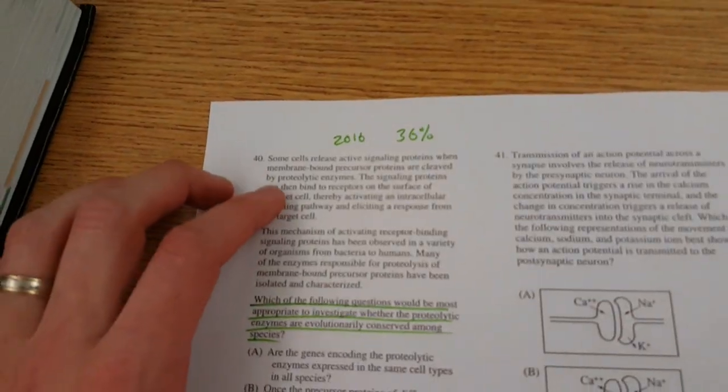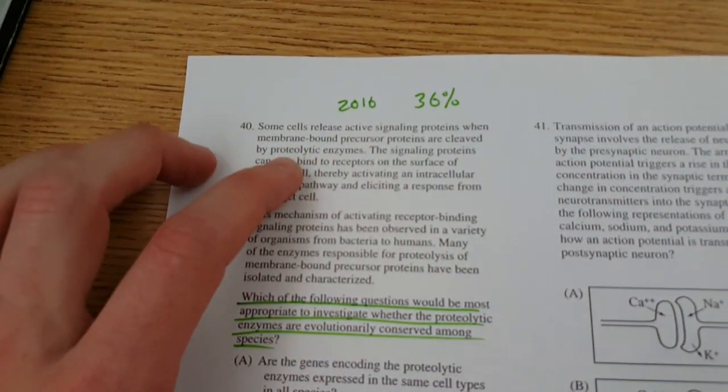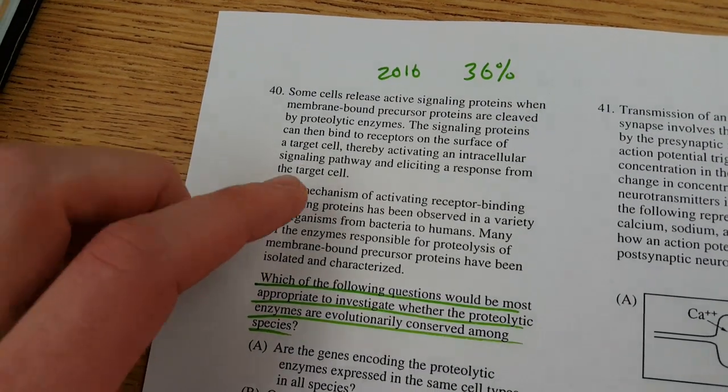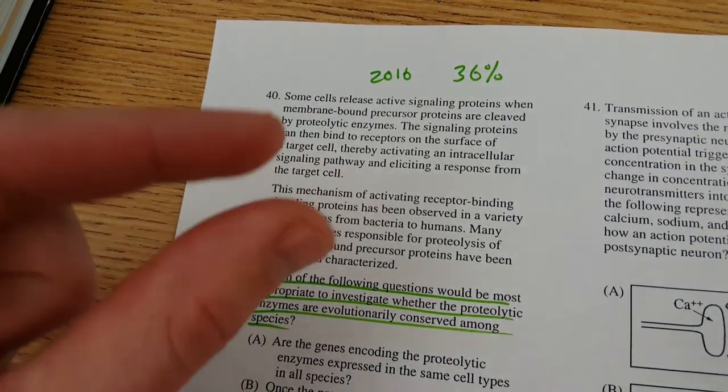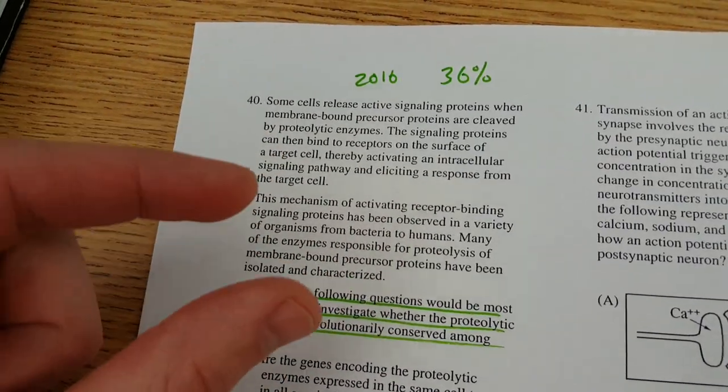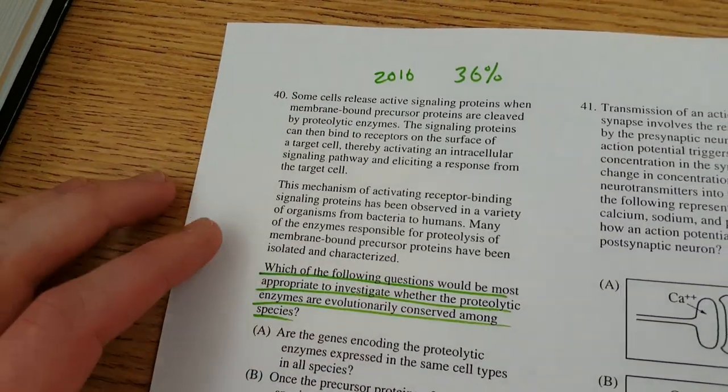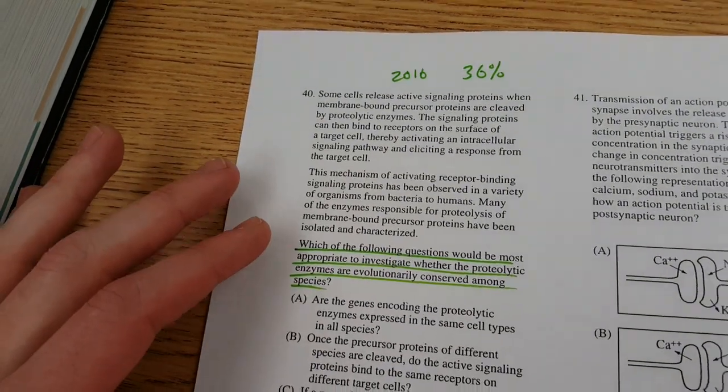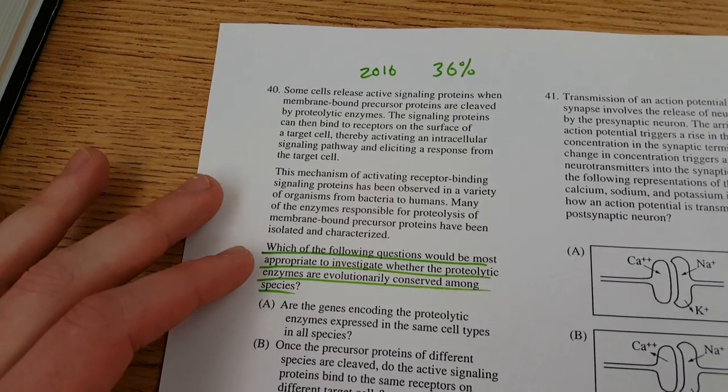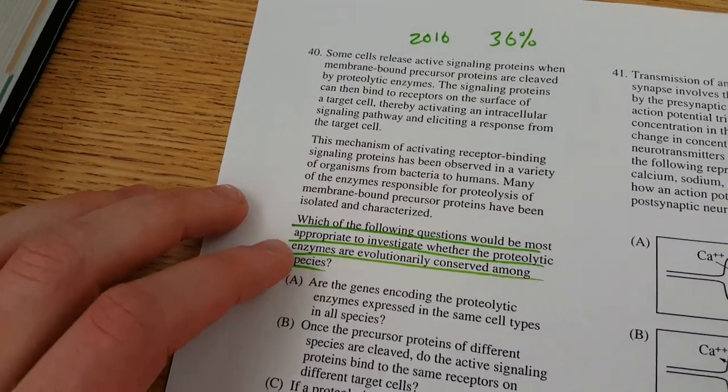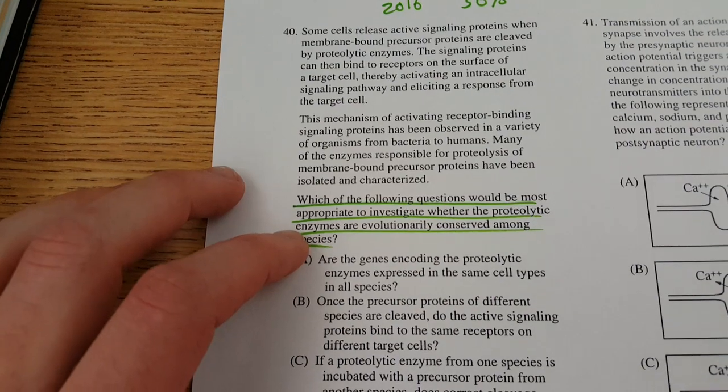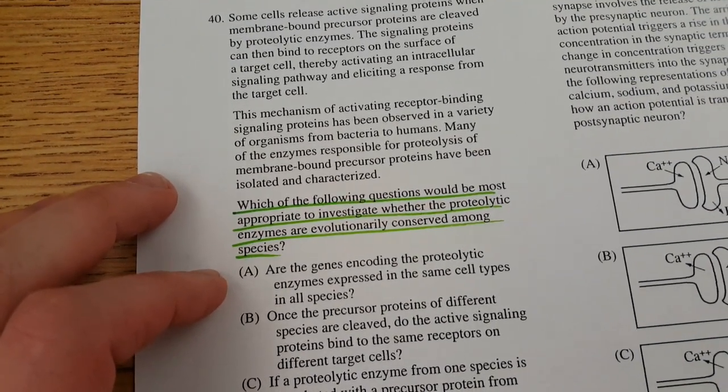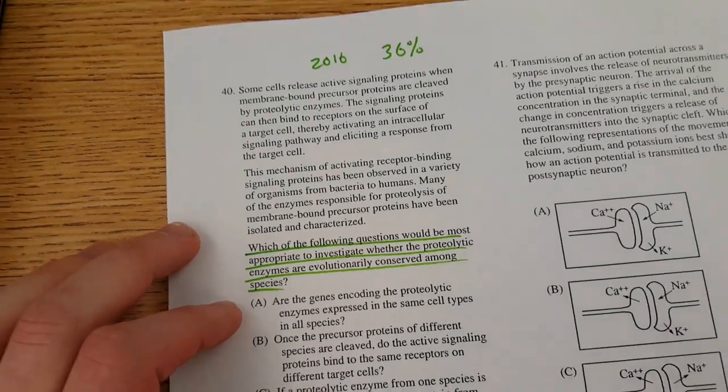So this is talking about these enzymes, they're calling proteolytic enzymes, that break down molecules, other proteins that are on the cell surface. And once those proteins are broken down into let's say two pieces, it's those two pieces that are actually used in the cell communication from one cell to another. And so that seems kind of complex, but I guess you could understand that pretty well if you are an AP biology student. But again, they eventually get down to here where they ask the question, and it's an evolution question.